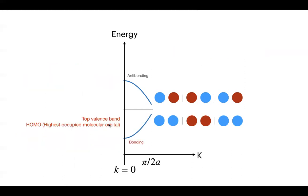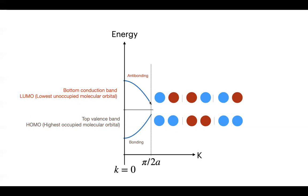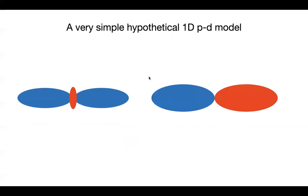An important note on terminology: physics and chemistry sometimes use different words for the same thing. In physics you refer to the top valence band, while in chemistry — thinking of the large crystal as a molecule — this is the highest occupied molecular orbital (HOMO). Similarly, the bottom conduction band in physics corresponds to the lowest unoccupied molecular orbital (LUMO) in chemistry.